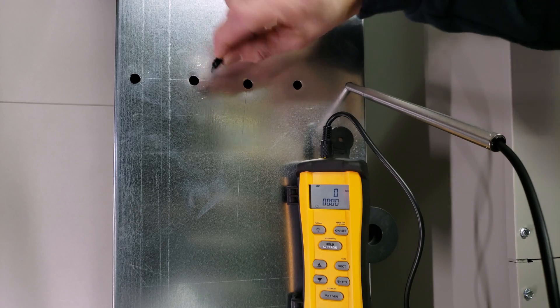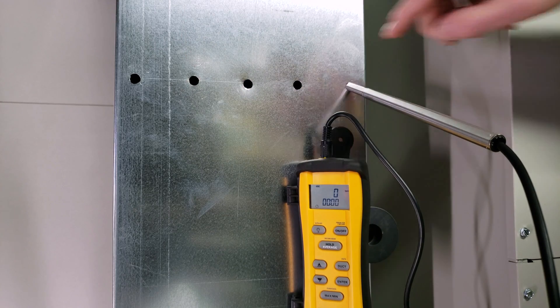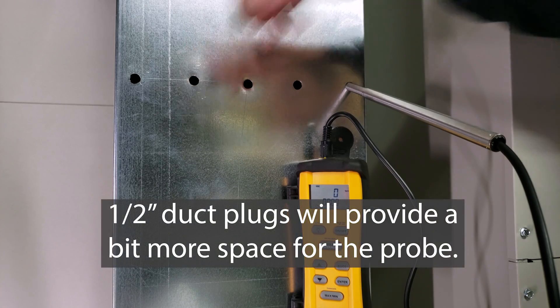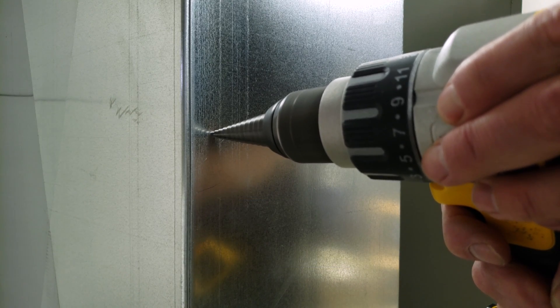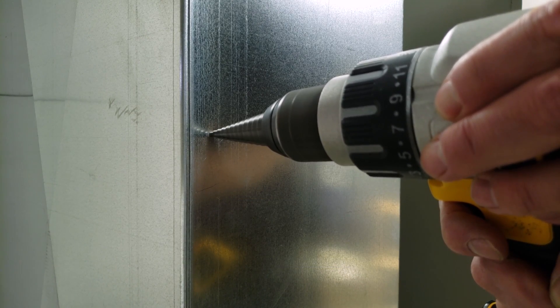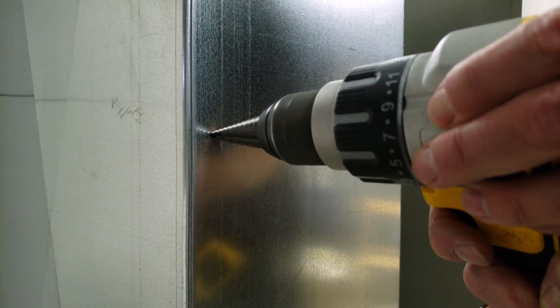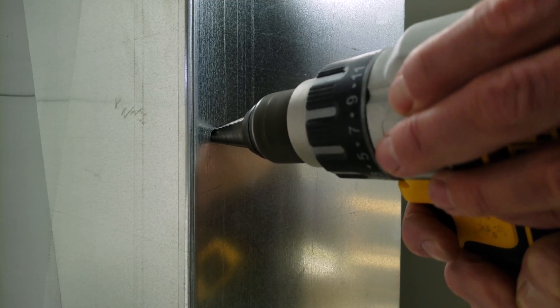Drill holes to the diameter of your duct plug, ensuring your probe fits. We're using three-eighths inch duct plugs. I usually use a unibit to drill into the duct. If you're not comfortable, put a washer on the unibit to stop from going too far. This is how I do it.